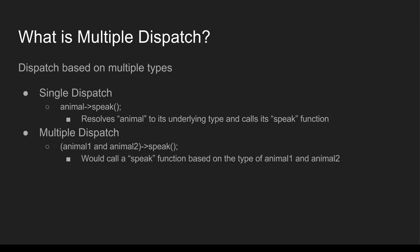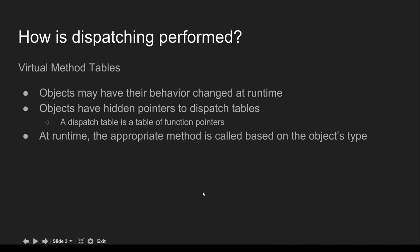The second word is 'dispatch.' I don't want to spend too much time on this because as we go through the code examples we'll be literally performing the dispatch ourselves. This dispatch that happens in object-oriented languages is often implemented via a virtual method table. These tables of function pointers are often called dispatch tables, and that's where the word 'dispatch' comes from — when we're using multiple types to dispatch into a function at runtime.